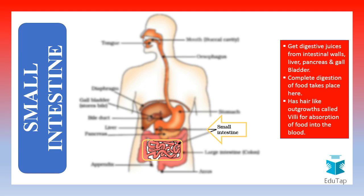After the digestion of the food has completed, the absorption of food into the blood starts. This is facilitated by hair-like outgrowths called villi present inside the small intestine.